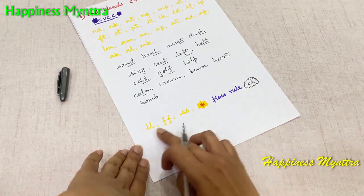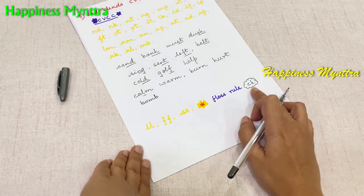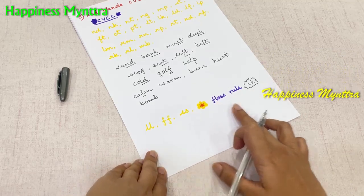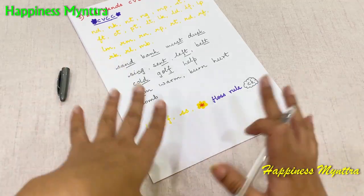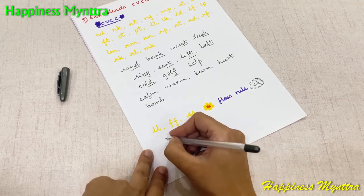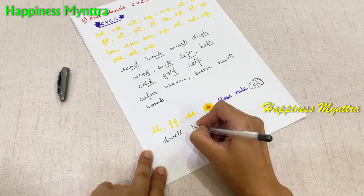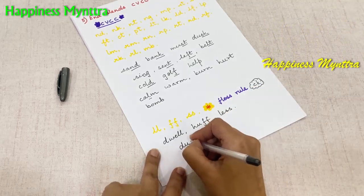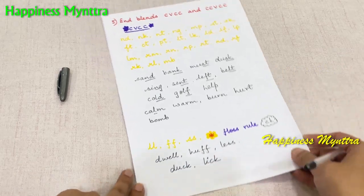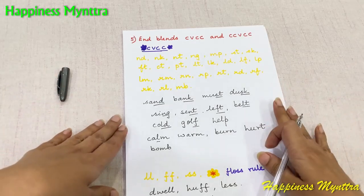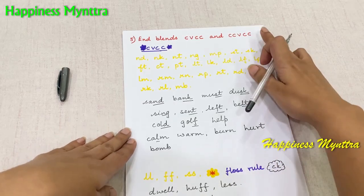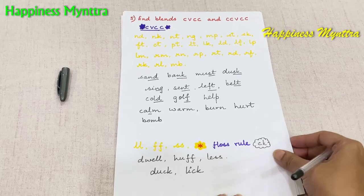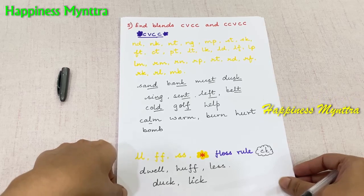After this we go on to the Floss Rule — double S, double F, double L — and I've also included CK because it follows basically the same rules. I have a whole video separately on the Floss Rule and when to use K, C, CK and the differences between them. Here we have words like 'Dwell,' 'Huff,' 'Less,' and with CK we have 'Duck,' 'Lick,' and more. Children must be familiar with end blends in four-letter words before moving to five-letter words.